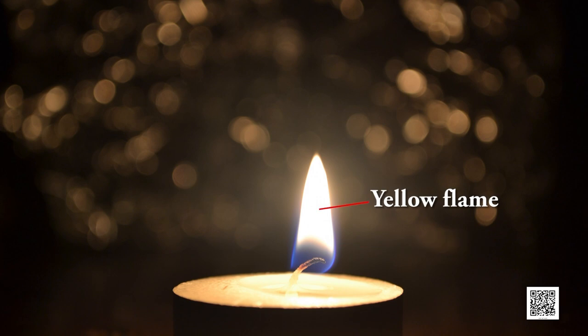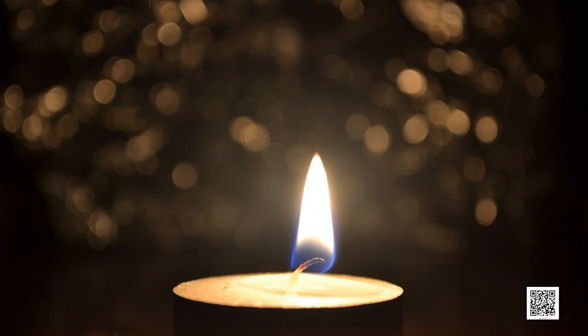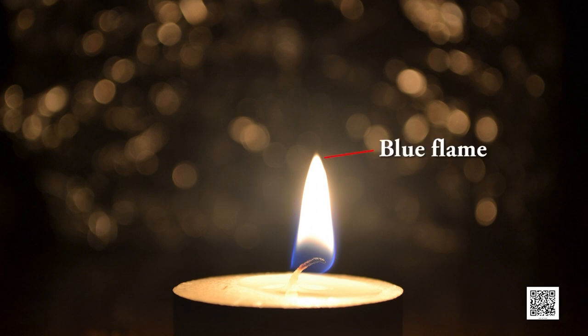In the middle region you will observe a brilliant yellow flame. Carbon burns in this zone, giving luminosity to the flame and producing carbon dioxide, so this zone is also called the luminous zone. Partial combustion takes place in this region and this zone is moderately hot. The outermost non-luminous zone is faintly visible and slightly blue — this is the hottest part of the flame, where complete combustion takes place.